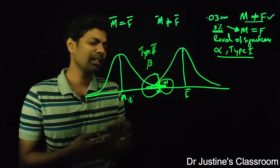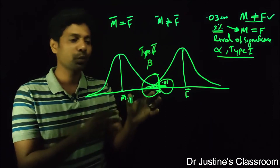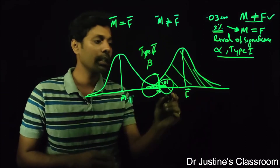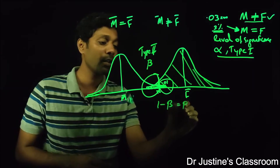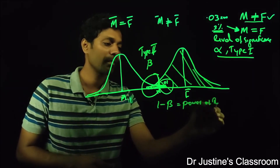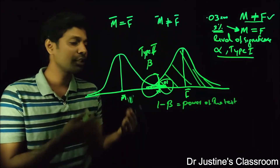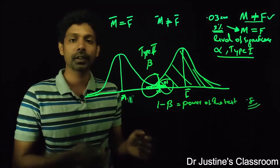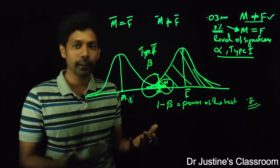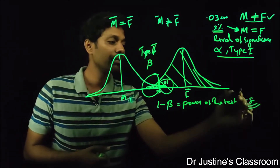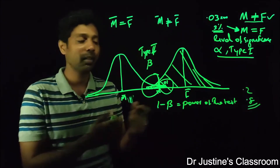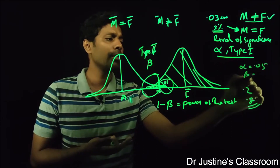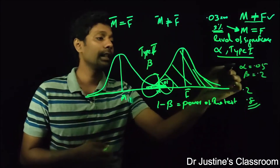The entire other area — that is, 1 minus beta — is called the power of the test. To make sure your test has good power, generally we keep a value of 0.8 as the power of the test, to say that your statistics are good and your sample size is sufficient. So what would the beta value be? 0.2. Generally we set the level of significance alpha as 0.05 and beta as 0.2 maximum. This is the general way in which we make decisions.